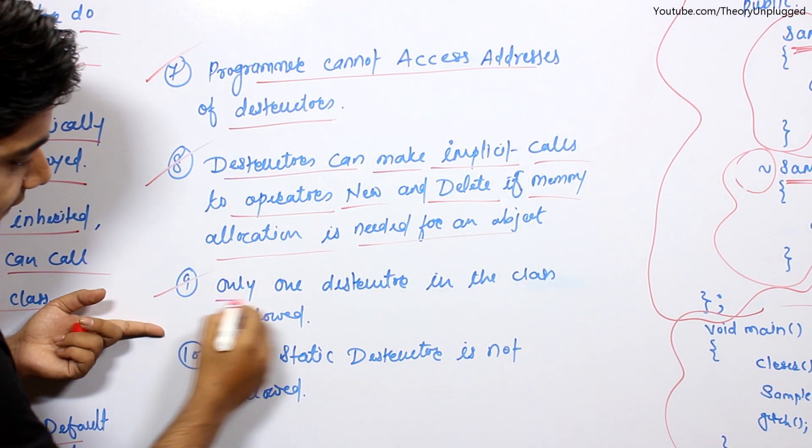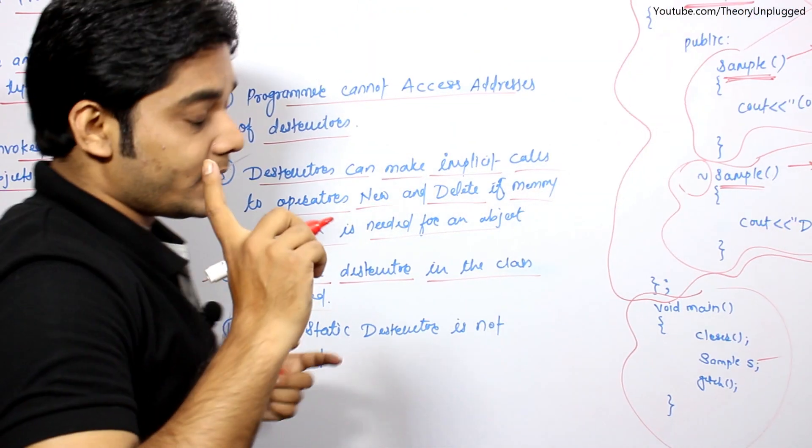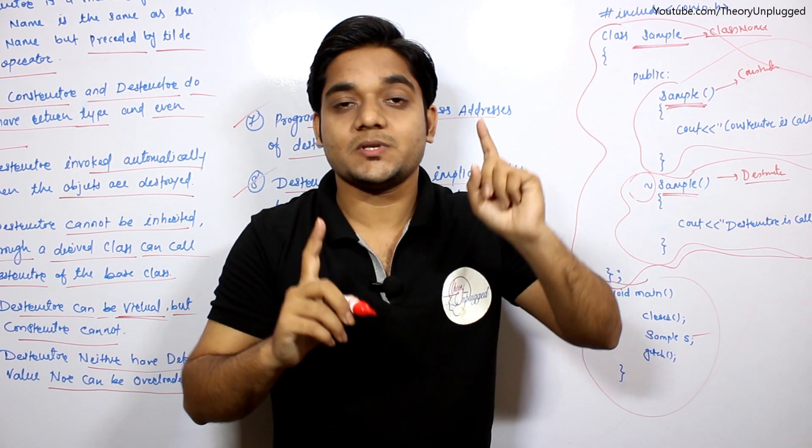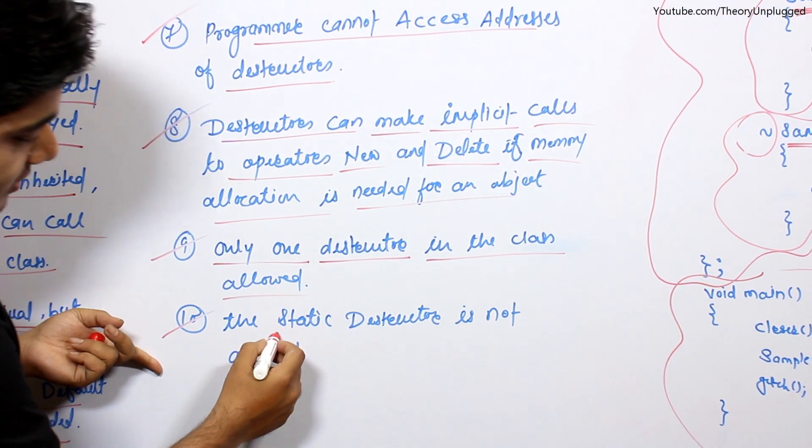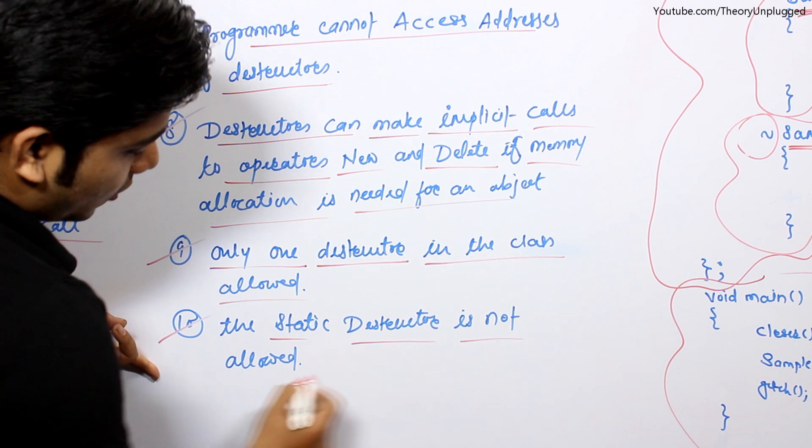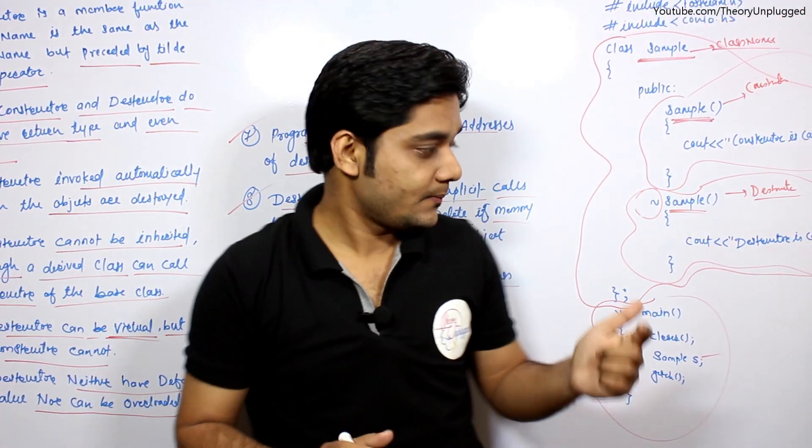Ninth point: only one destructor in the class is allowed. The important thing is that there will be only one destructor in the class. Tenth point: static destructor is not allowed. Obviously, static destructor is not allowed.